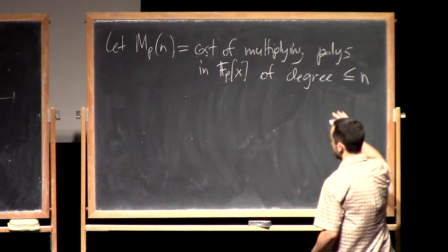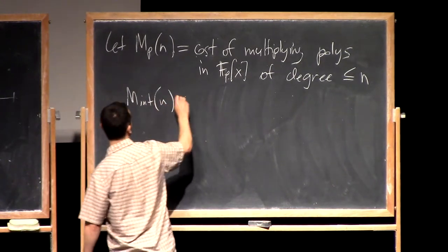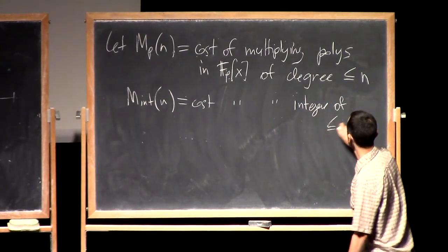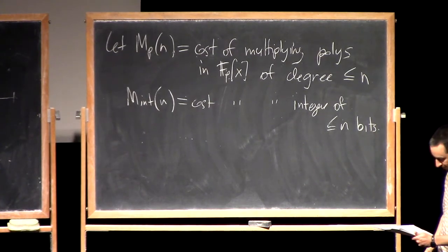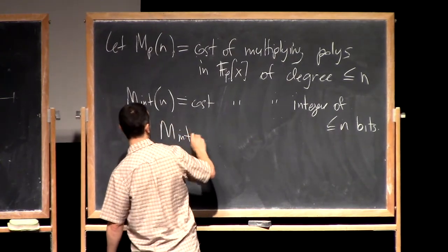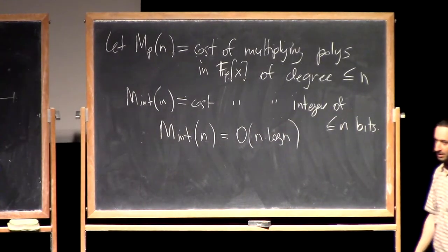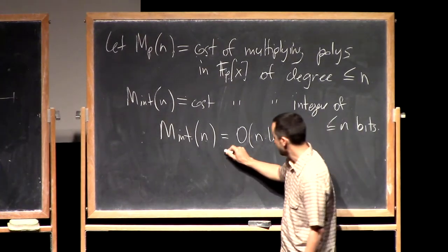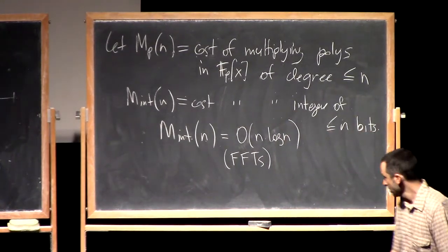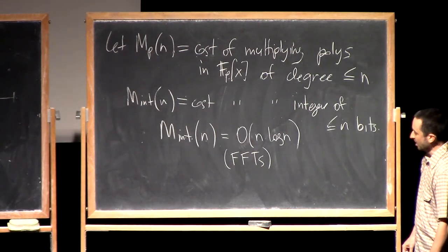A few years ago I proved with Joris van der Hoeven that integer multiplication can be done in time O(n log n). This is an annoyingly complicated algorithm using a lot of FFTs and other fun things. So we have M_int(n) = O(n log n). Now, what do we know about M_p(n)?